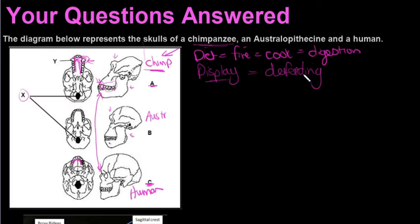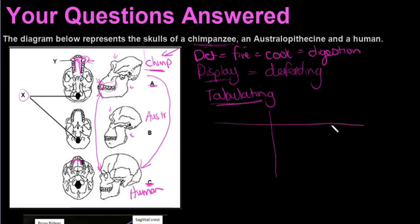They can ask you to compare the skulls between A and C, generally done by tabulating the differences. When you see the word tabulate, it means the examiner wants you to draw a table. It doesn't have to be fancy, just a cross shape, and remember to say what you're comparing.